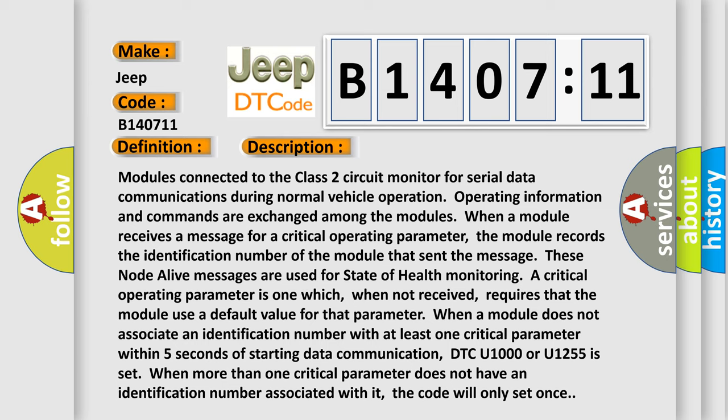These node alive messages are used for state of health monitoring. A critical operating parameter is one which, when not received, requires that the module use a default value for that parameter. When a module does not associate an identification number with at least one critical parameter within five seconds of starting data communication,